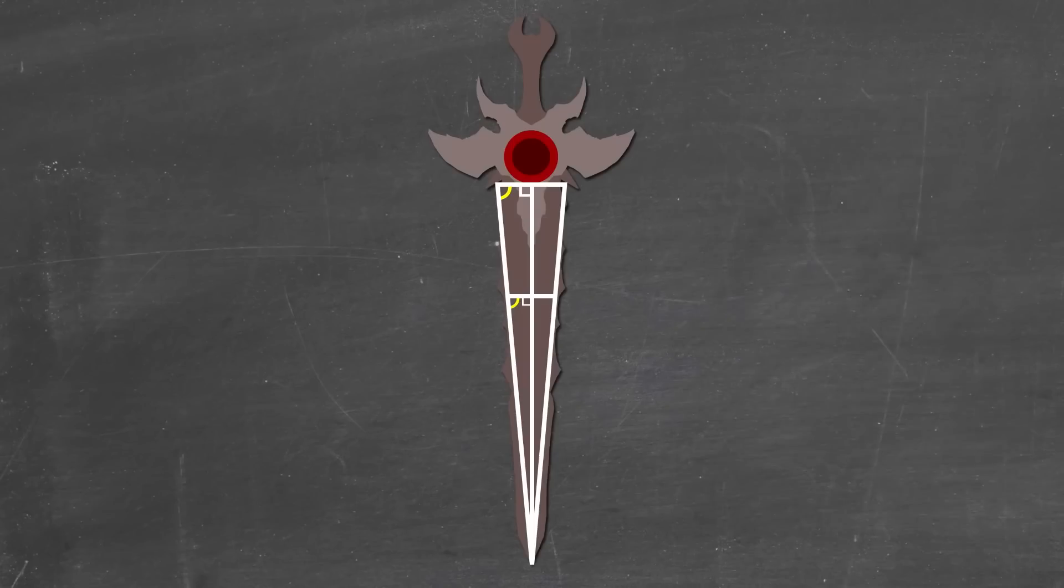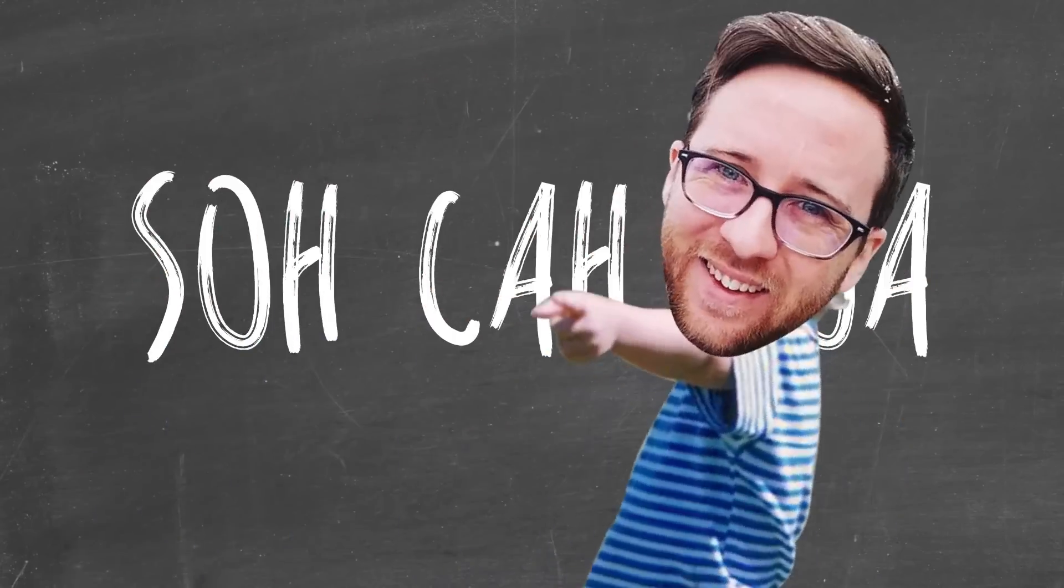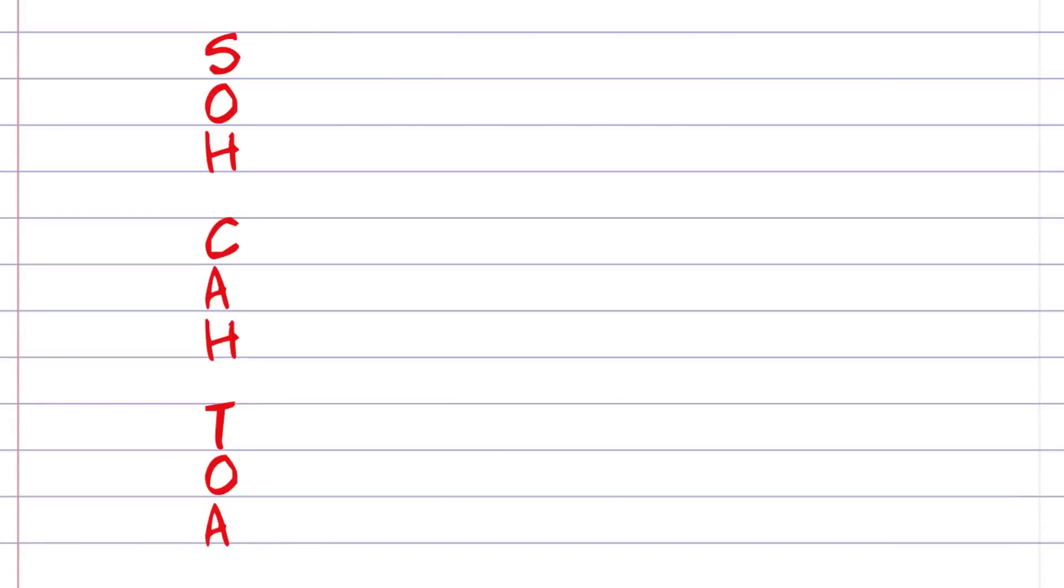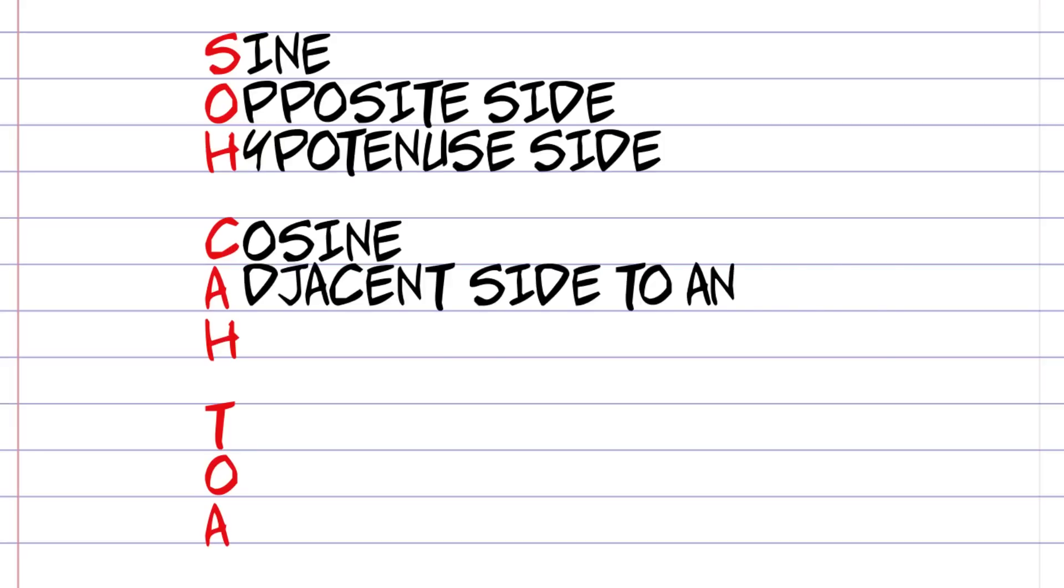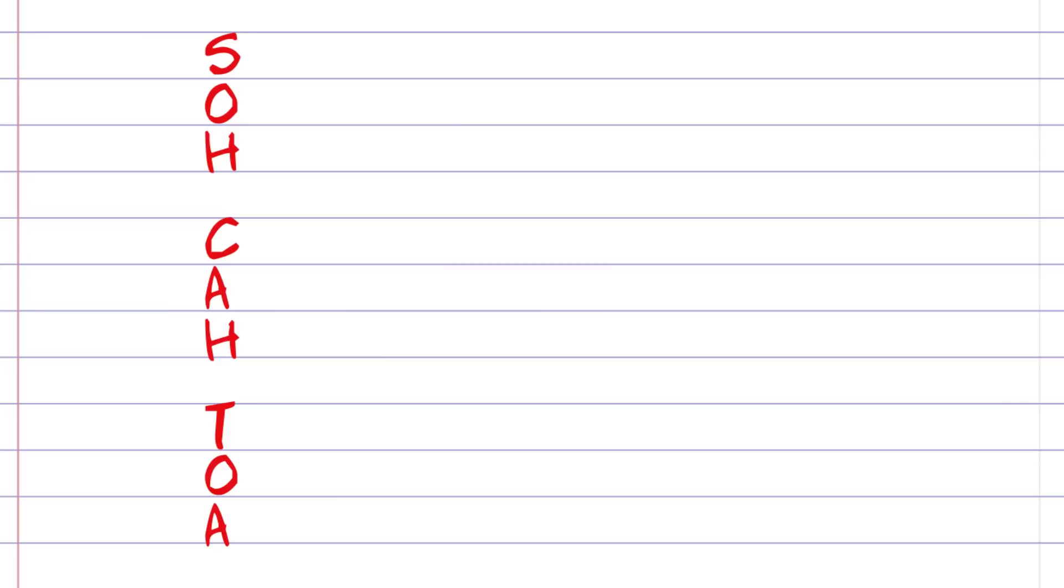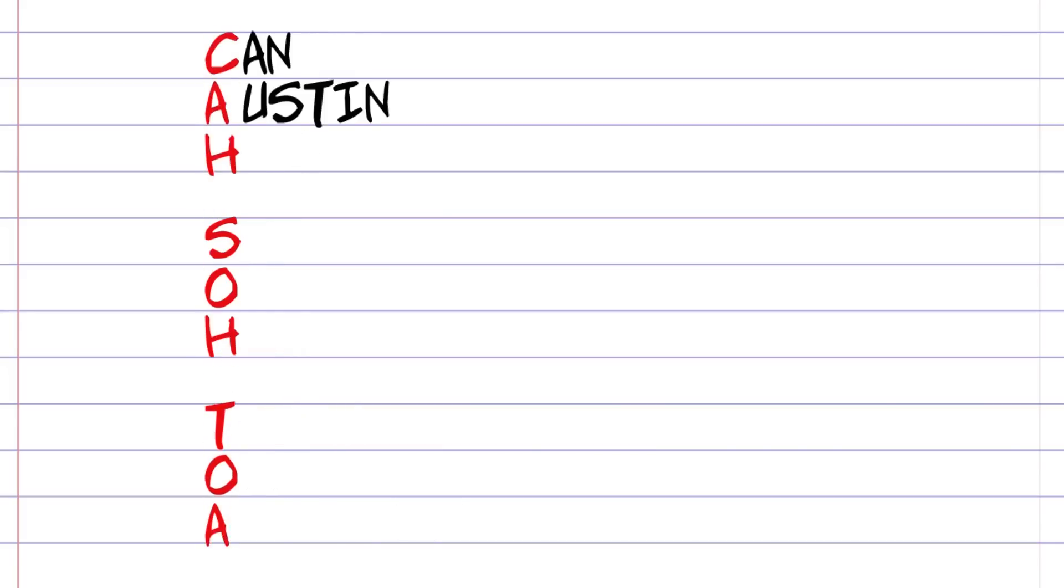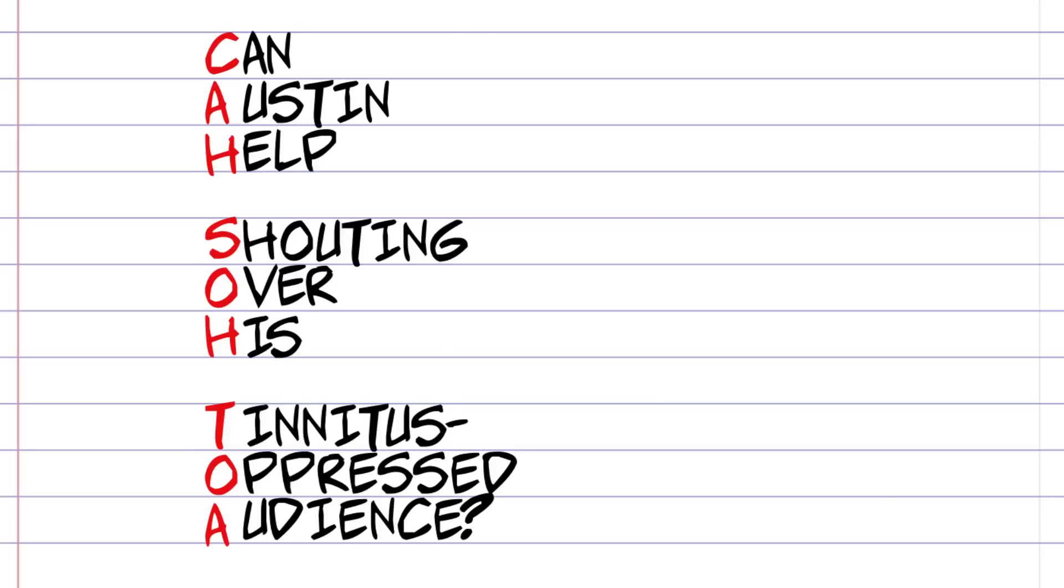Thankfully, since this triangle, the side view of the pyramid, is an isosceles triangle, which means that these two sides are the same length and these two angles are the same, and we know what the base width is and the height is, most of our job is already done for us. We just have to bust out good old Sokotoa! Oh, do you not remember what that is? You know what? Don't even feel bad. I have to look up every single time, too. And I even mess it up sometimes, still even then. Sokotoa is a mnemonic device that's supposed to help you remember which functions to use to find unknowns. Sine is when you have the opposite side and the hypotenuse, cosine is when you know the adjacent side to an angle and the hypotenuse, and tangent is for the opposite side and the adjacent side to the angle. There's also some other crappy mnemonic devices like, some of her children are having trouble over algebra, and Tom's old aunt sat on her chair and hollered, but I propose a new one! Can Austin help shouting over his tinnitus-oppressed audience?